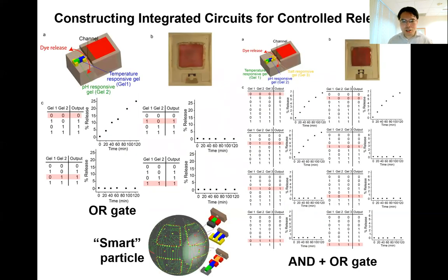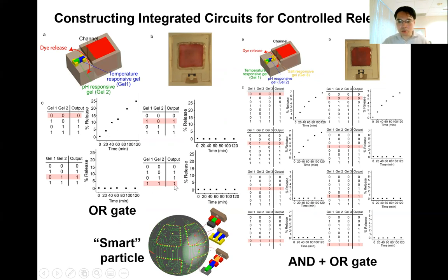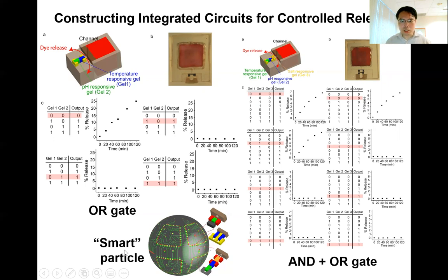Not just the construction of integrated logic gates — we show that we can also use the logic gates for controlled release by combining them with a reservoir of chemicals. The release of the chemical depends on the logical sequence, for example for the OR gate and for the integrated circuit of AND plus OR gates. Because integrated circuits can be used for controlled release, we believe we will be able to fabricate smart particles that include a massive number of these logic gates on the surface for performing high-level analytical functions of the surrounding environment.